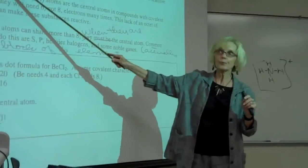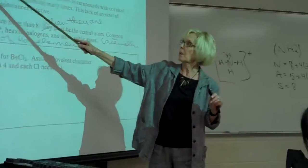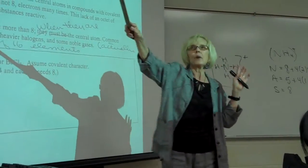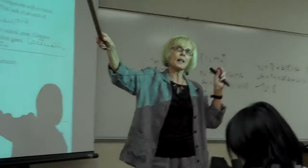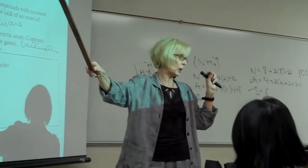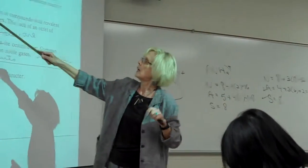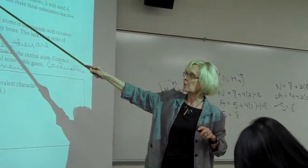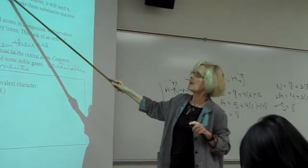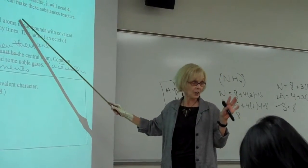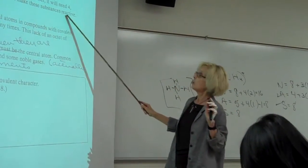Now, rule two. If you have beryllium, actually you could make it more general and say something from the 2A family, but the main one that does this is beryllium. If it's the central atom in a compound that has covalent character, it will need four.